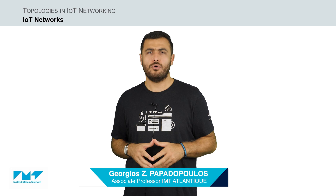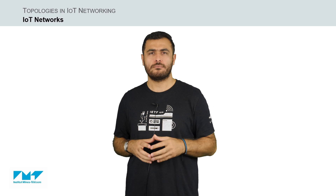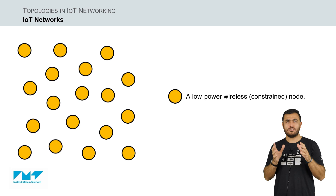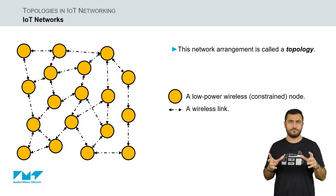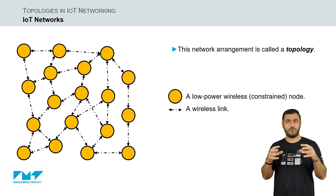Hi, welcome to this introductory week on IoT topologies, or how the devices are organized into a network around the gateway. IoT networks, just as their counterpart the Internet, are structured networks where constrained devices are organized in a given hierarchy. This network arrangement is called a topology, which indicates how the constrained devices are interconnected.